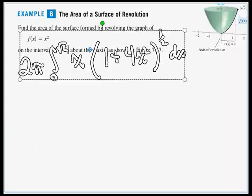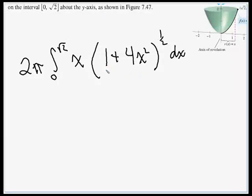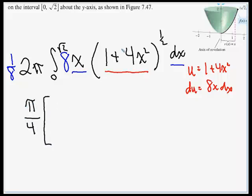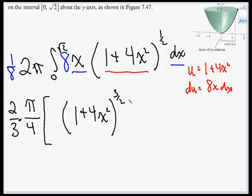It looks like a u-substitution: u = 1 + 4x², so du = 8x dx. We have x dx but need 8x dx, so we tweak with an 8 inside and 1/8 out front. Then 1/8 times 2π is π/4. Integrating gives (1 + 4x²) to the 3/2 power times 2/3, evaluated from 0 to √2.